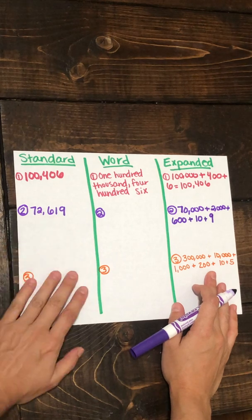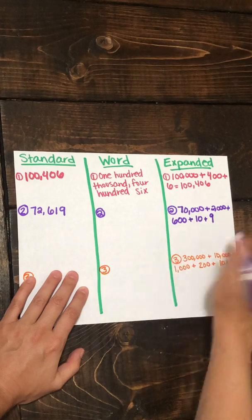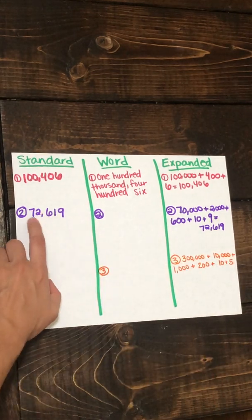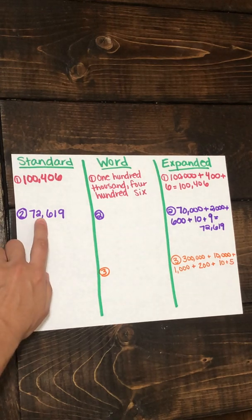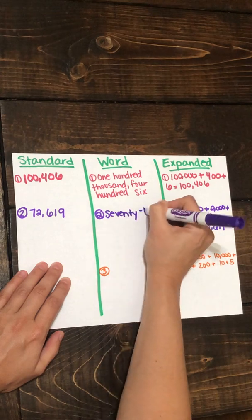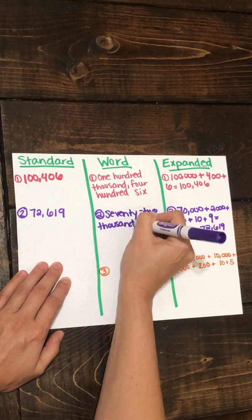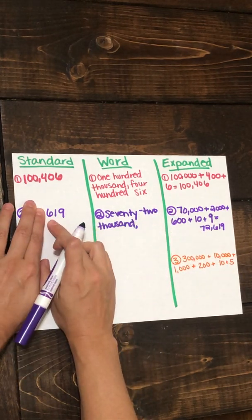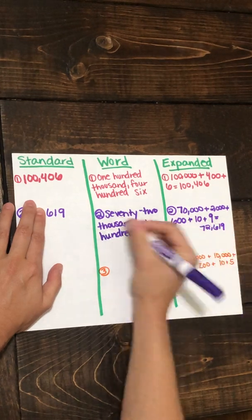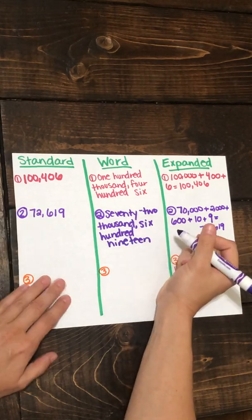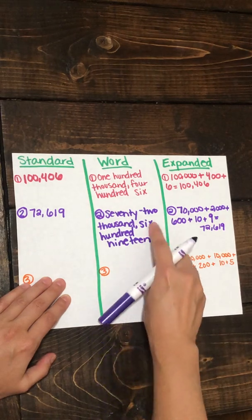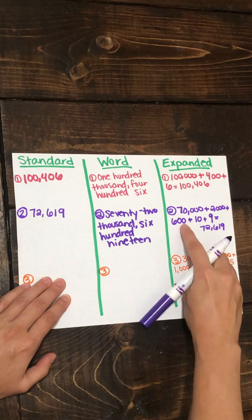So we have 72,619 = 70,000 + 2,000 + 600 + 10 + 9, and that would equal 72,619. Now let's see if we can change it to word form. Looking at our first section, we have 72 in the thousands section, so we have seventy-two thousand. The number left is 619, so I would write that as six hundred nineteen. So the word form is seventy-two thousand six hundred nineteen.